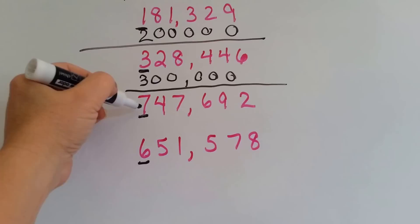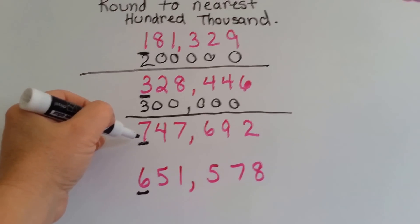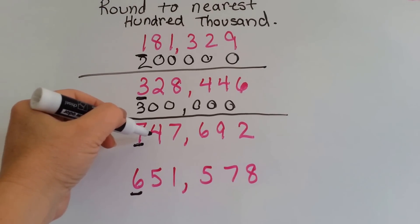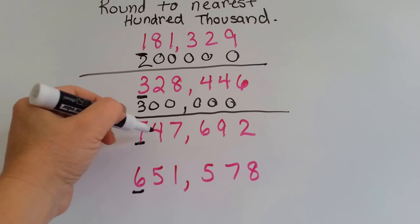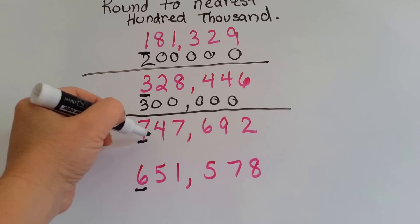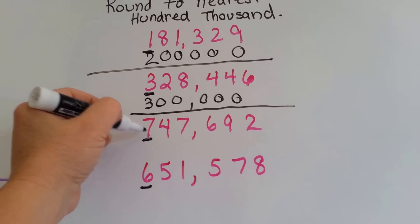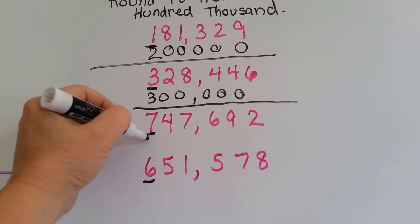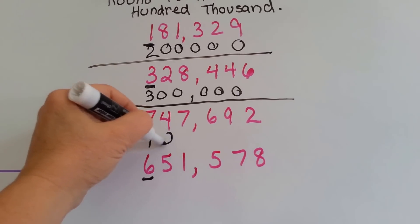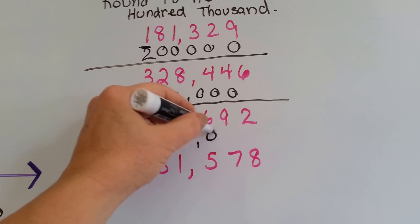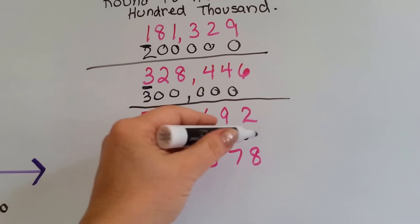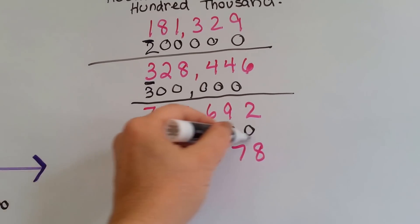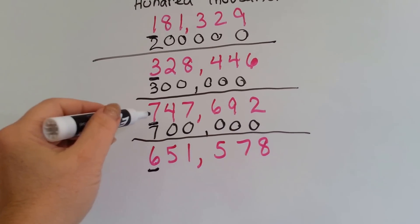Let's try it again. The number to the right is a 4. Remember the rule: 5 says to go up. It's not 5 or bigger — it's a 4. So that means it's going to stay the same. It tells the 7 to just stay the same, so we write our 7. 4 is done with his job — he turns into a 0 and everybody behind him turns into a 0. It rounds to 700,000.